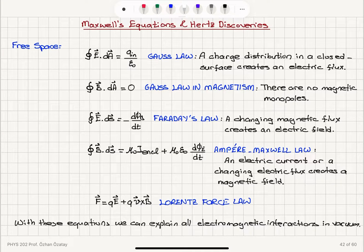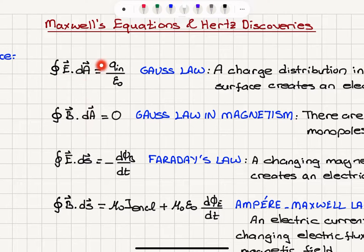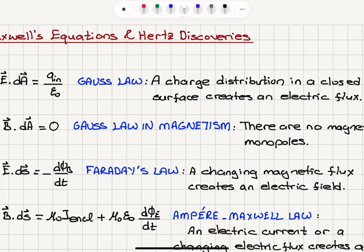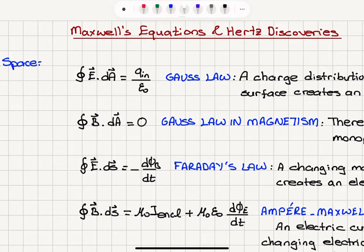We're going to start with a review of Maxwell's equations in free space. We have the electric flux in a closed surface: the E dot dA integral is equal to the charge enclosed by the surface divided by permittivity of free space. This result is known as Gauss's law, and it tells us that a charge distribution in a closed surface creates an electric flux.